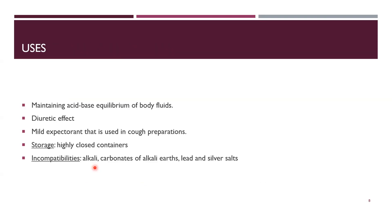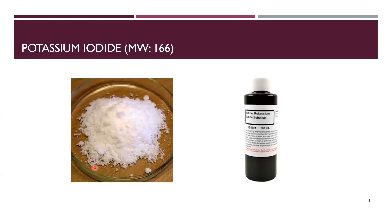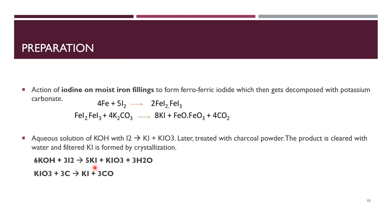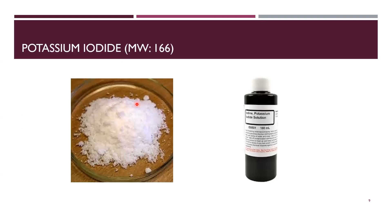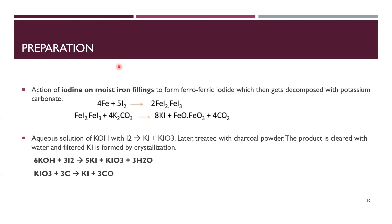Next under expectorants is potassium iodide, with molecular weight of 166 and formula KI. We will now look into its preparation.